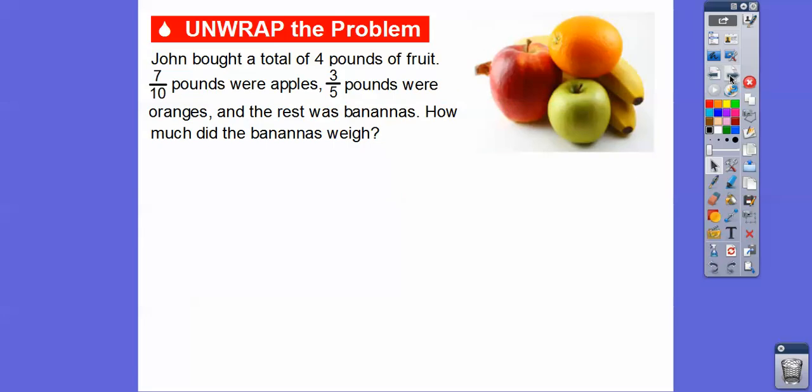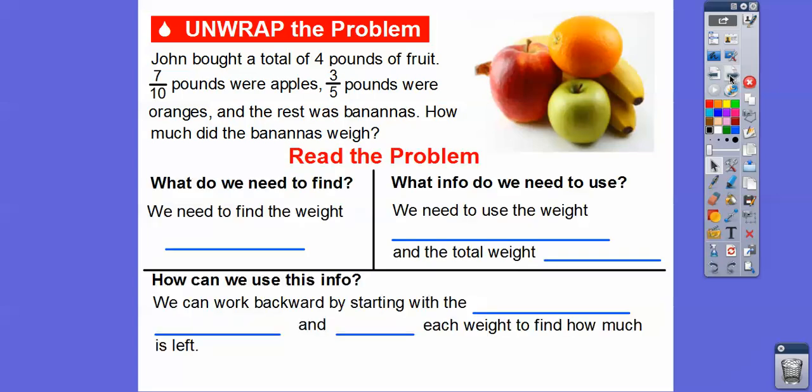Here's an example. John bought a total of 4 pounds of fruit. 7 tenths pounds were apples. 3 fifths pounds were oranges. And the rest was bananas. So how much did the bananas weigh all together? So what do we need to find? Well, this is always our last piece right here, our last sentence. So we need to find out how much the bananas weighed.